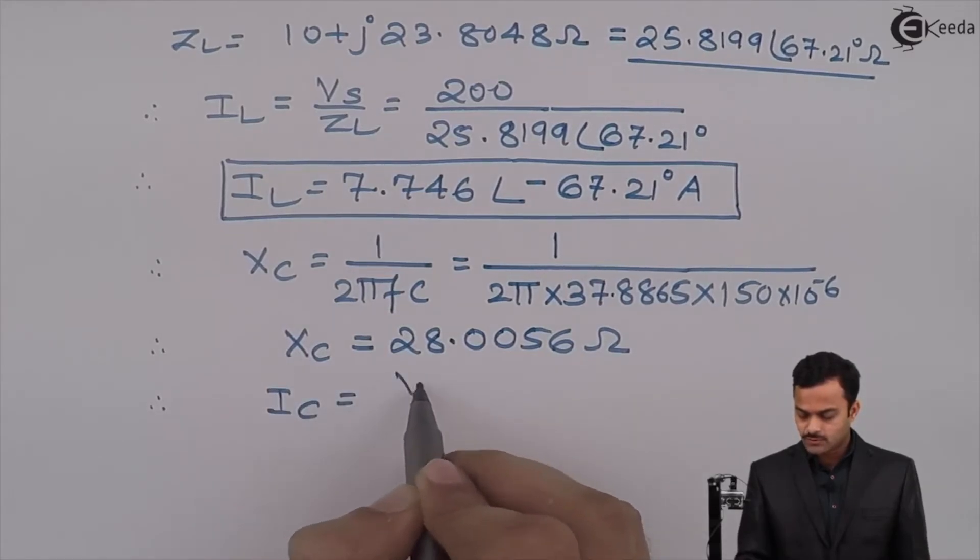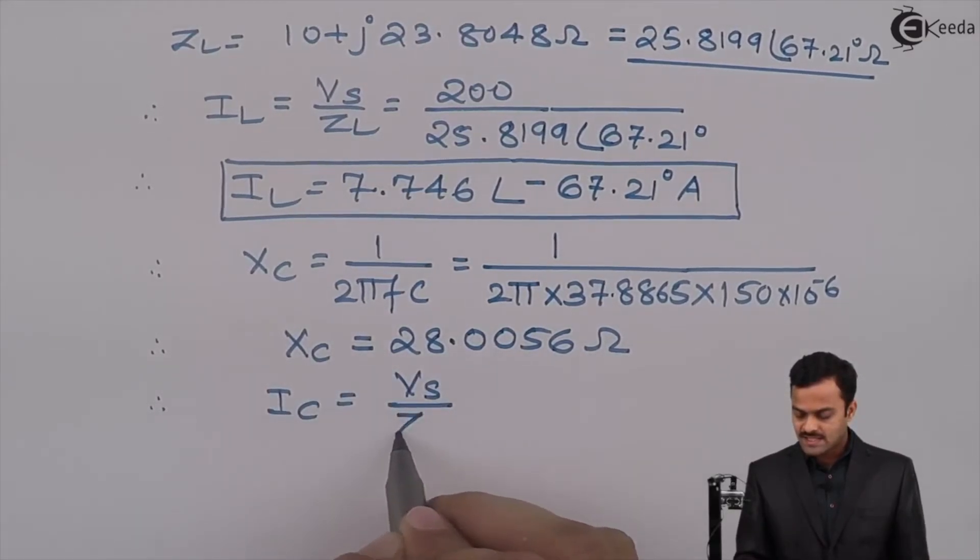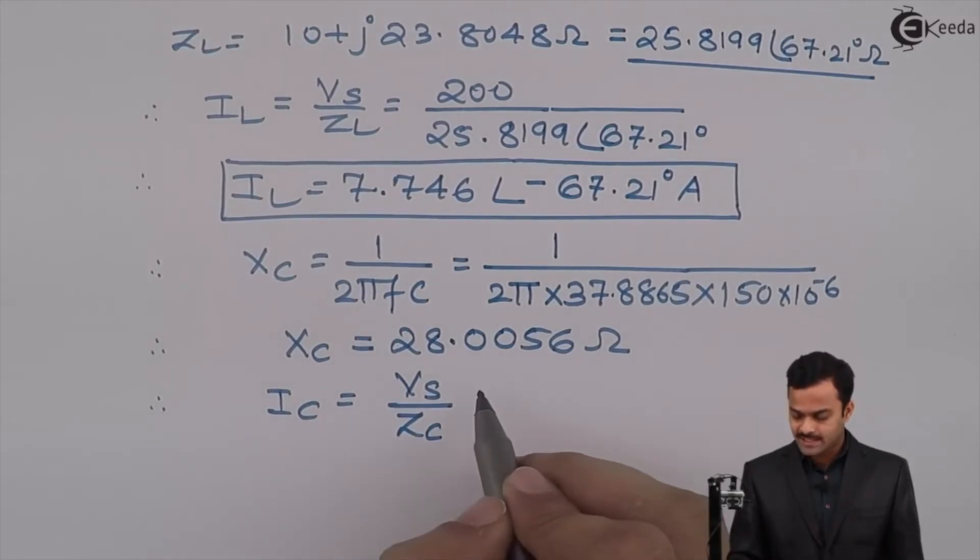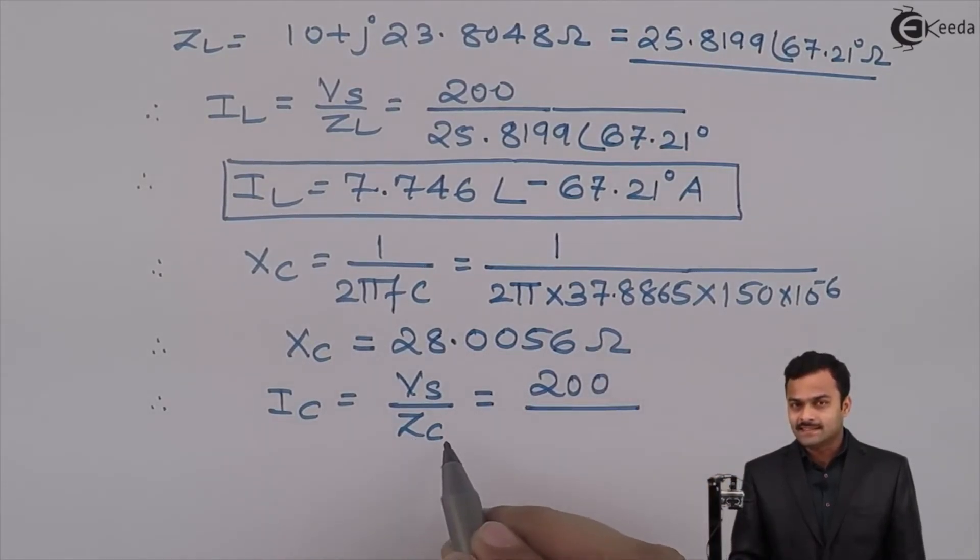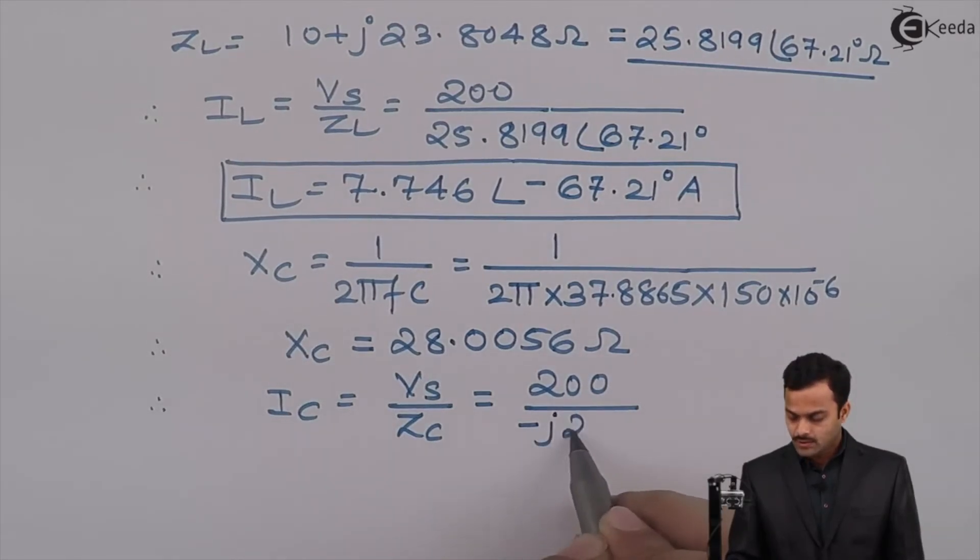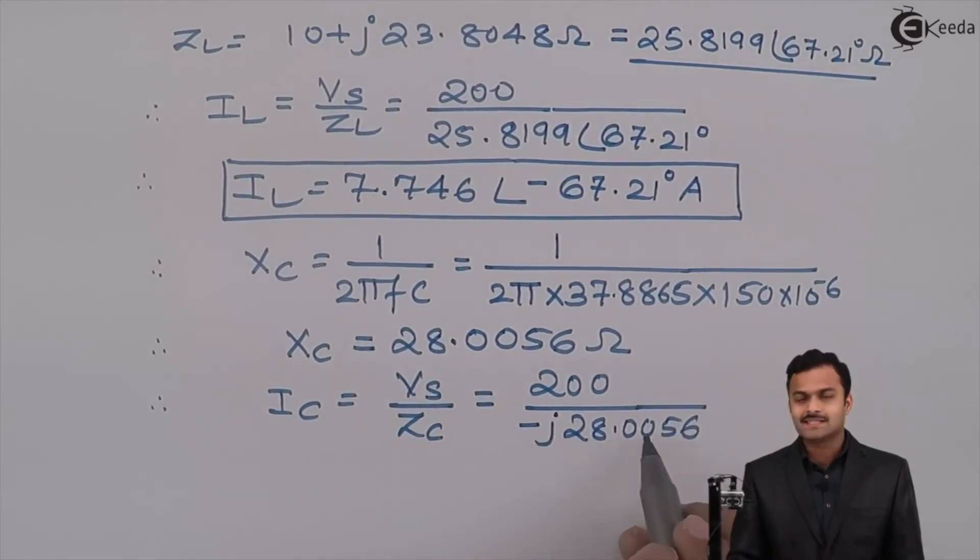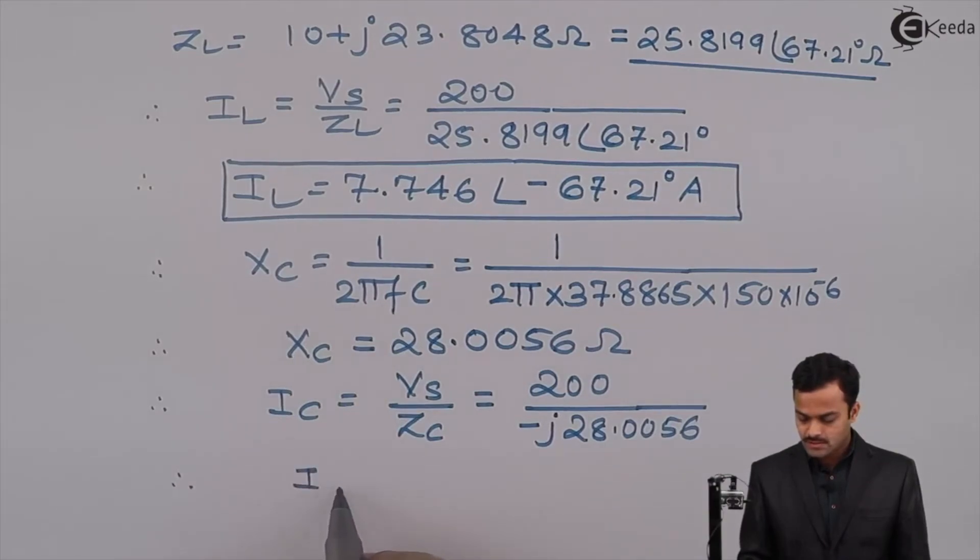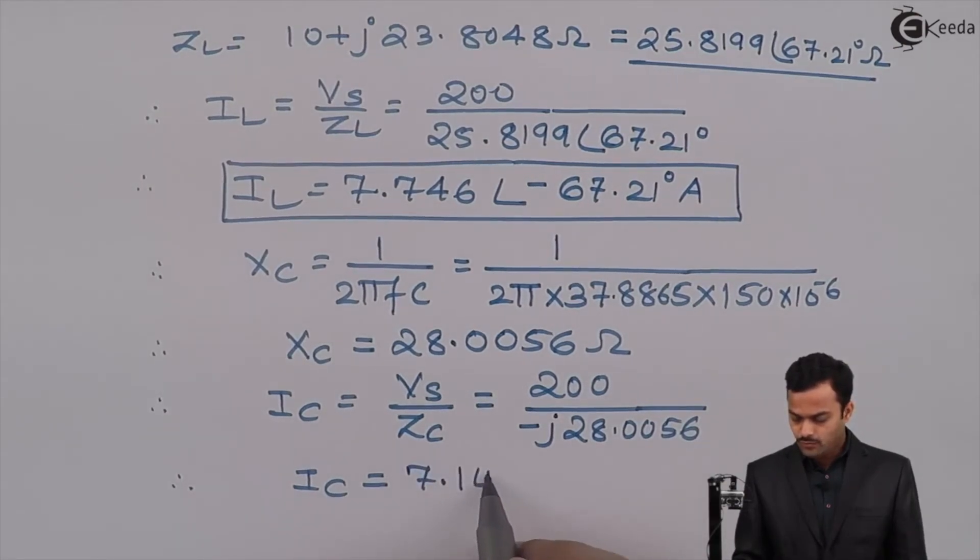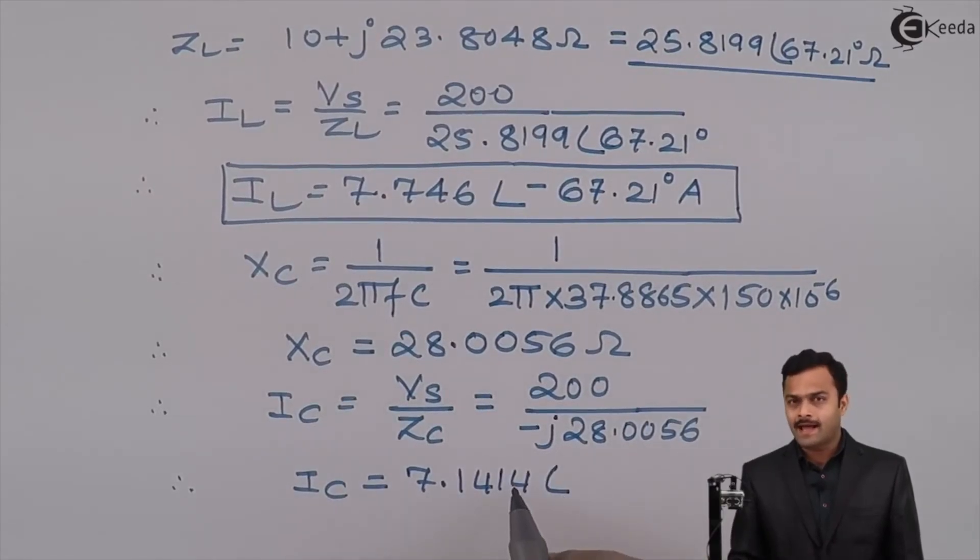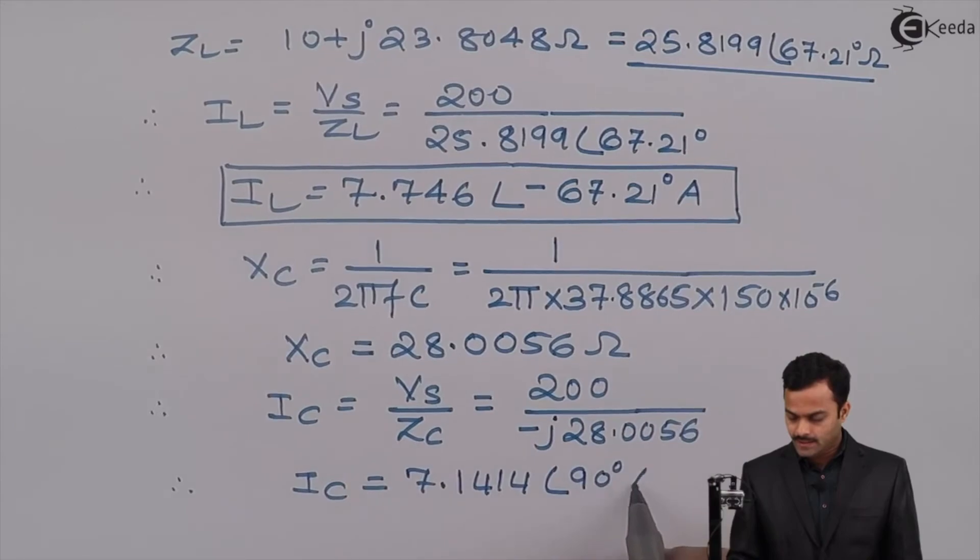Let's calculate current flowing through the capacitor. That is equal to Vs upon ZC or XC you can say. Now Vs is 200, ZC is nothing but minus j XC, so it's minus j 28.0056. So you have to consider this as a phasor and after solving this you will get IC equal to 7.1414 at an angle 90 degree ampere.